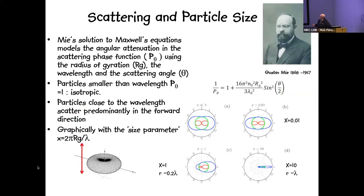The description of this angular attenuation of scattering was developed by Gustav Mie. In Mie theory, you can model the angular attenuation using the scattering phase function, which includes the radius of gyration, the angle, the wavelength of light, and a number of other constants. When particles are much smaller than the wavelength, the entire expression tends to zero, so the scattering phase function equates to one.